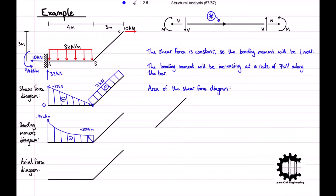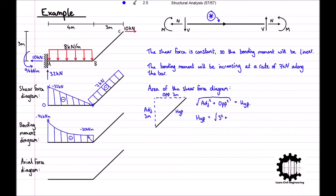We need to know the length of bar BC as well. Using Pythagoras, the length of bar BC is equal to the square root of 3 squared plus 3 squared, which equals 4.24 meters to two decimal places. The area of the shear force diagram equals 7 times 4.24, which equals 30 kilonewton meters rounded to the nearest integer.